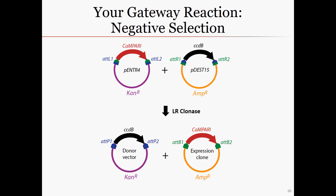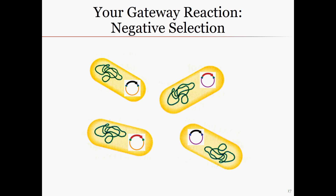Another feature of this system is the negative selection of the plasmids that do not contain our gene of interest. Both the starting plasmid, PDEST15, and the undesired ending plasmid, the entry vector without Campari, contain the ccdB gene in place of our gene of interest. Remember that this ccdB gene, shown in black, functions as a toxin, so any cells containing it will not be able to grow following transformation. This screening method greatly increases the probability of getting our desired product plasmid.